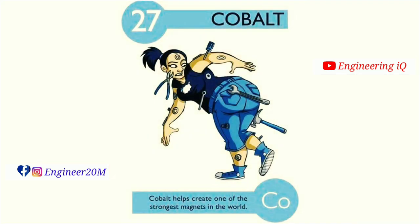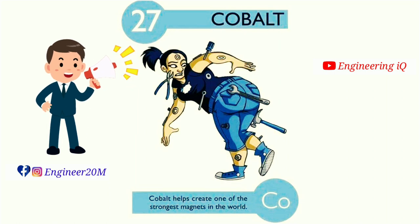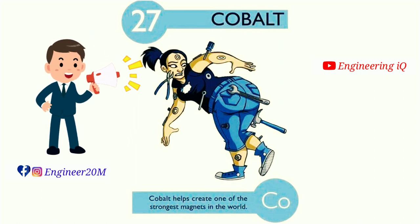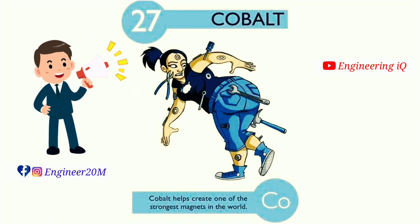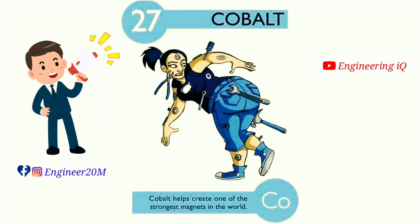Cobalt: atomic number of cobalt is 27. Cobalt helps create one of the strongest magnets in the world. It is denoted by Co.